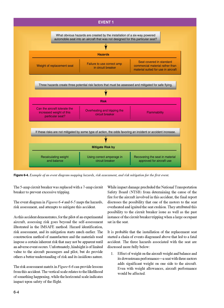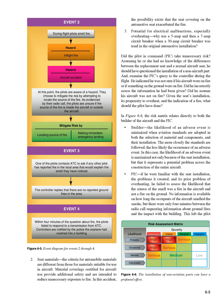Three hazards associated with the seat are discussed: First, effective weight on aircraft weight and balance — a seat with three motors adds significant weight on one side of the aircraft. Even with weight allowances, aircraft performance would be affected. Second, seat materials — the criteria for automobile materials are different from those for materials suitable for use in aircraft. Material coverings certified for aircraft use provide additional safety and are intended to reduce unnecessary exposure to fire. In this accident, the seat covering on the automotive seat may have exacerbated the fire.